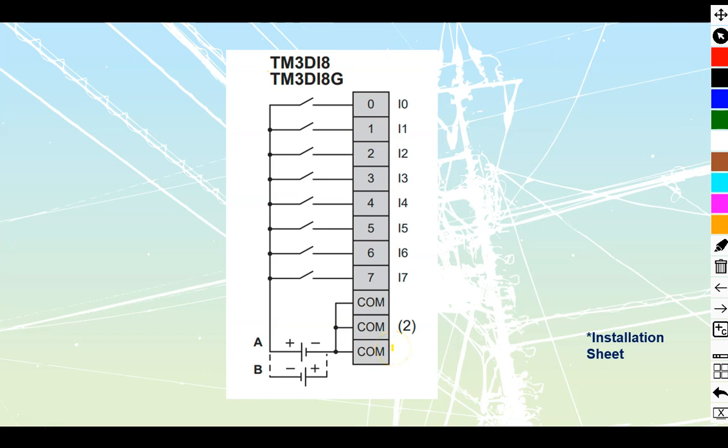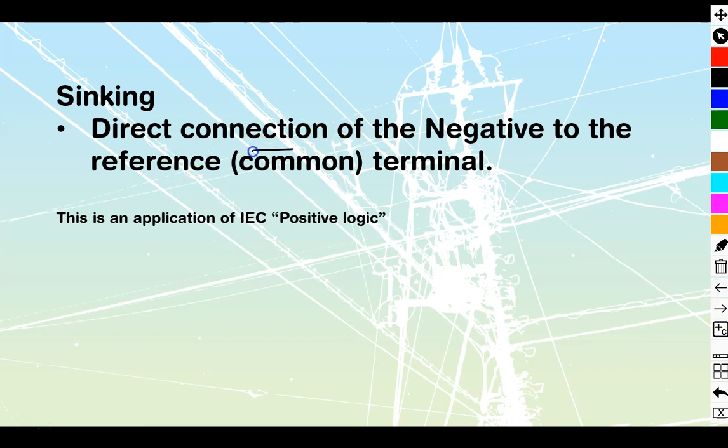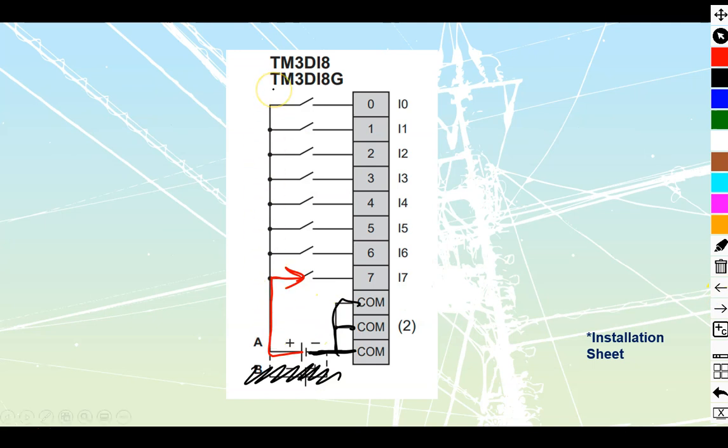It shows me that I can do one of two things. I can either attach a negative that they have over here to my commons like this over here and then take a positive stinger out to my field devices to switch in. Or I could do the alternate, the B method over here. What you're not supposed to do is A and B at the same time. B is going to be a sourcing input. We're going to scratch that out because that's not what we're looking at. This is what we're going to replicate. Taking a negative 24 volts DC because that's what it's rated for. We're attaching the negative to the common because that is going to be sinking - direct connection of the negative to the reference or to the common that we will have. And then taking our positive out to the field devices.